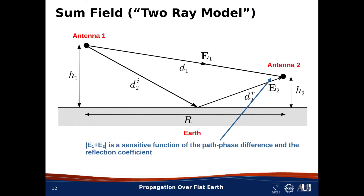Putting all these considerations together, we have what is commonly known as the two-ray model for terrestrial propagation. The model says that in the absence of any other scattering, the signal received by Antenna 2 is the sum of a direct path and a reflected path. The contribution from the reflected path depends on whether the wave is TE or TM, but perhaps less so when the range becomes sufficiently large. The actual value of the sum field will be very sensitive to the difference in path lengths, as we anticipated, and an example will be helpful to appreciate this.